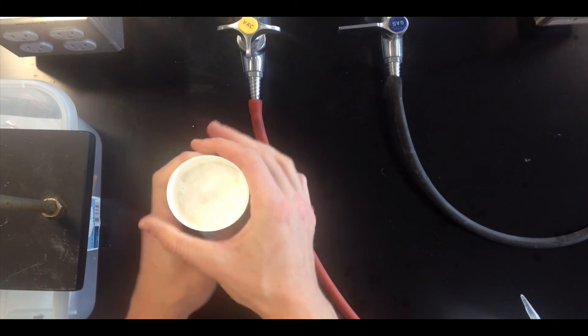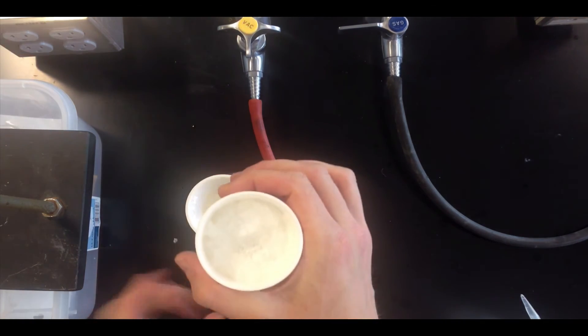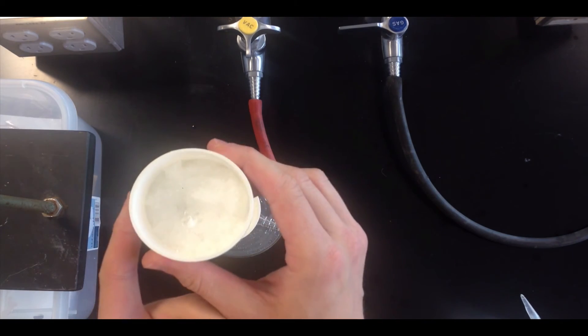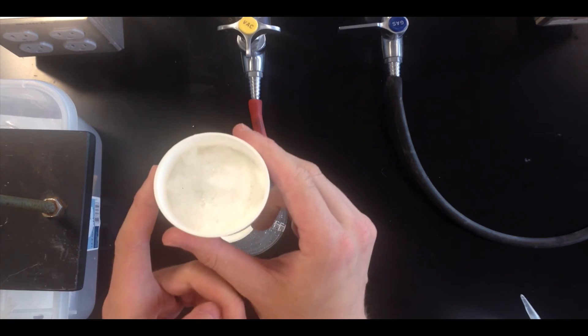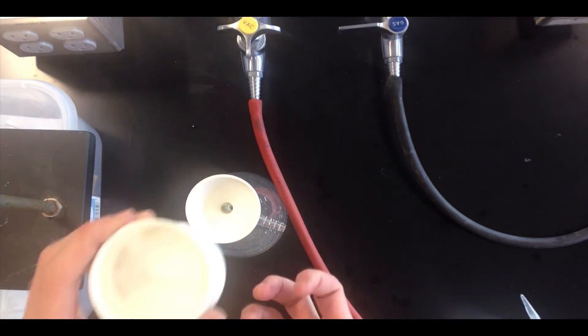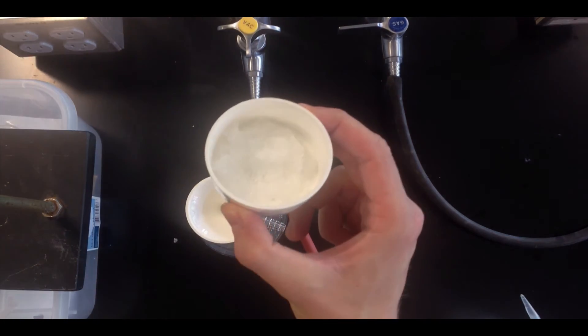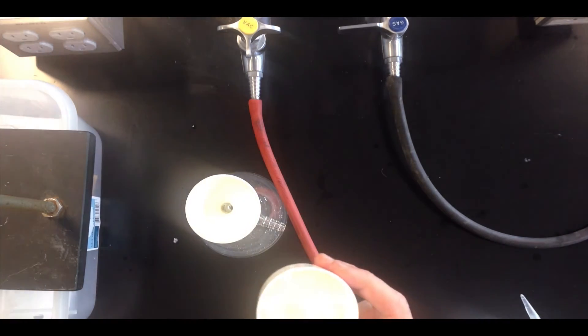And from here, you can remove the top half of the Buechner funnel and work with this part independently. So if you're being super clever, you could, for example, weigh this part of the Buechner funnel and the filter paper before filtering the solid, and then weigh this entire thing again to get the mass of solid only.